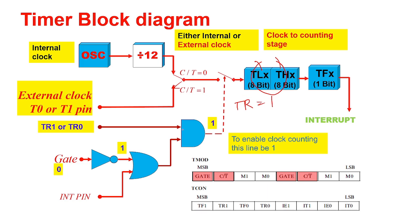Here you have an AND gate and an OR gate. For the AND gate, both inputs must be high to get a 1 output. If this is 1, the TR bit enables the clock, and the count will start. The OR gate logic means if any one input is high, you will get a high logic output.